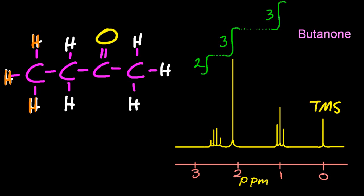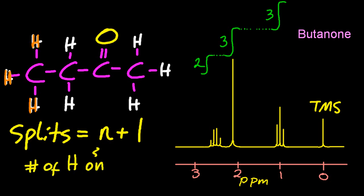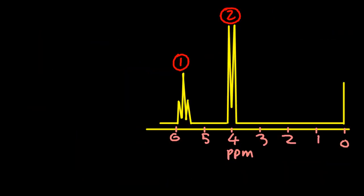So the splitting pattern is n plus one. So what's n? It's the number of hydrogens on the next carbon, which you could call adjacent. There might be more than one carbon. And we have to dig a little deeper here.